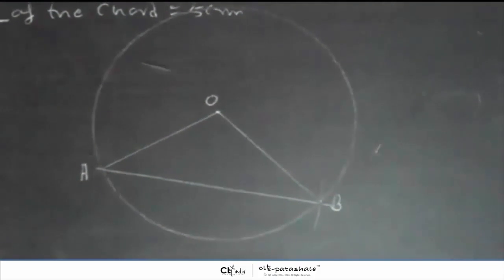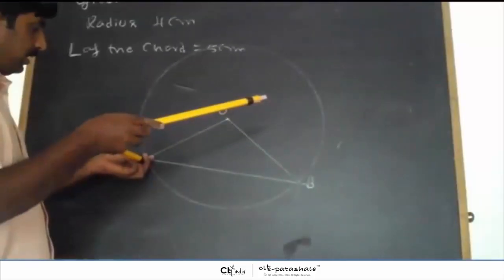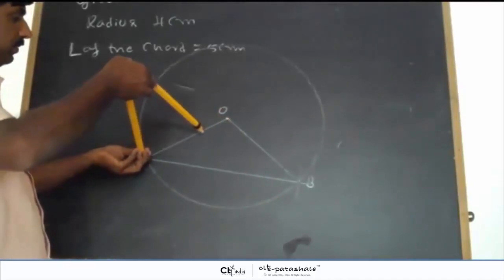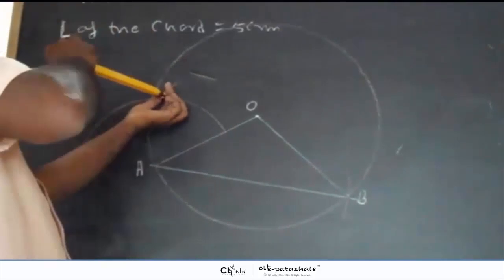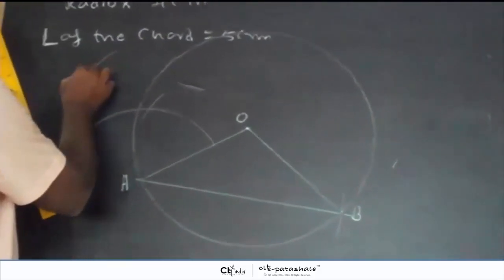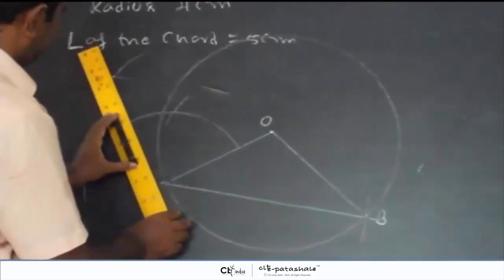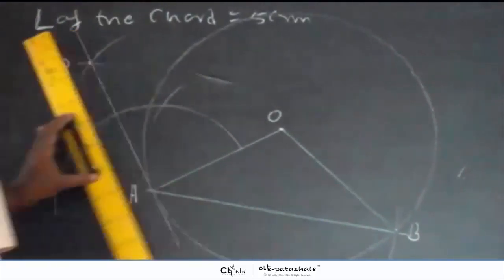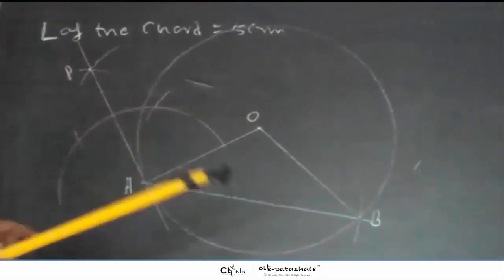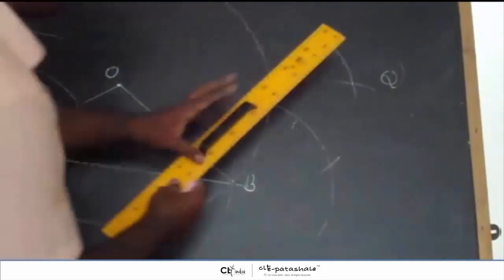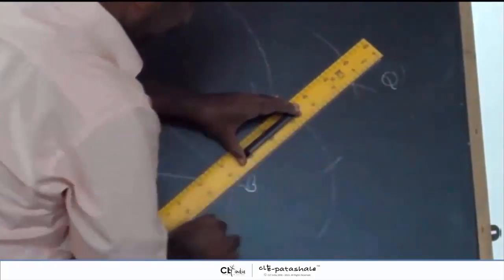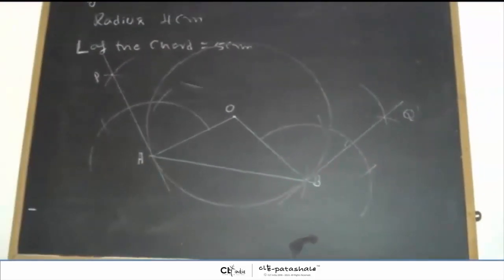Now consider the tangents at the ends of the chord. With A at the center, draw a semicircle and cut the arc, marking point P inside. Similarly, with B at the center, draw a semicircle and mark point Q, then draw BQ. Here PA and BQ are the tangents at the ends of the chord.